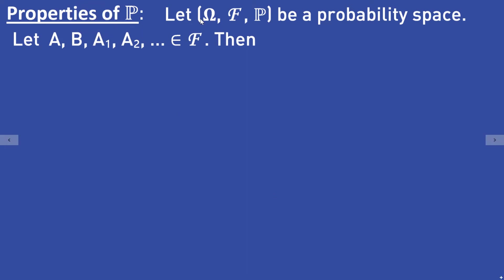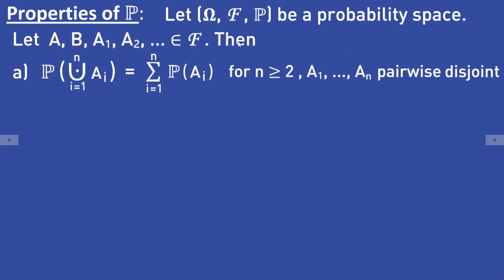Let omega, F, P be a probability space. Let A, B, A1, A2, and so on be some sets in the sigma algebra F. Then if the sets A1 to An are pairwise disjoint, then the probability of the finite union of these sets is equal to the sum from i equals 1 to n of the probabilities of Ai. That property is called finite additivity.